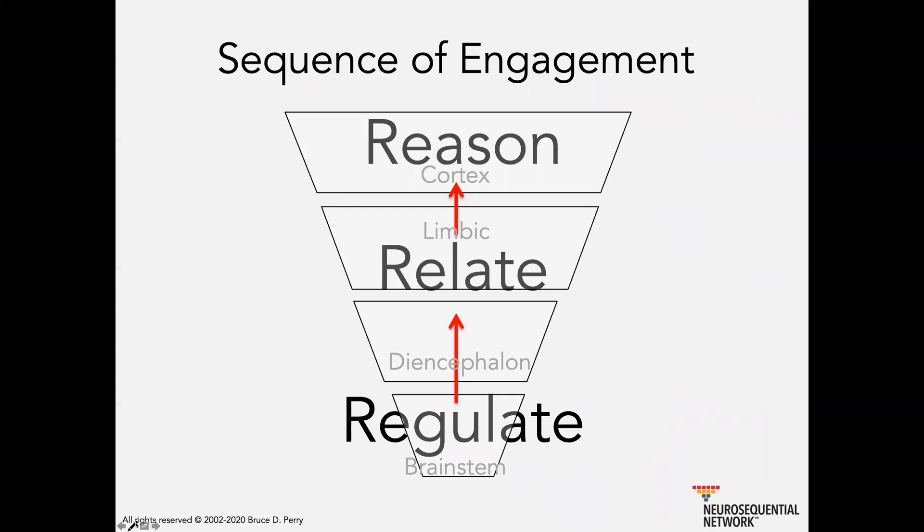Part of what we've tried to help people appreciate is that if you really want to reason with somebody, we know that the most effective way to engage the human cortex is through relational interactions. When people feel safe and they feel connected to the person that they're interacting with, they will be better capable of hearing accurately what that person is trying to communicate. Now, this engagement process, in turn, depends upon a sort of a minimal level of regulation in the person who you're trying to communicate with. And as I talked about on our last session, it also requires a certain degree of regulation on your part. So if you're regulated, you have a chance of helping the other person be regulated, of connecting with them, and then communicating with them. And this is really what the sequence of engagement is all about.